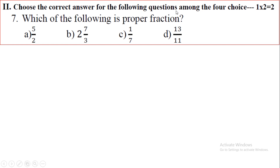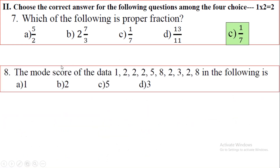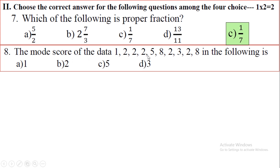Second main — choose the correct answer. For 'which of the following is a proper fraction': a proper fraction means the numerator is less than the denominator. Checking the options, option C is correct — it is the proper fraction. For the mode score of the data 1, 2, 2, 2, 2, 5, 8, 2, 3, 2, 8: the mode is the most repeated value. Here 2 is repeated 5 times, so 2 is the mode.